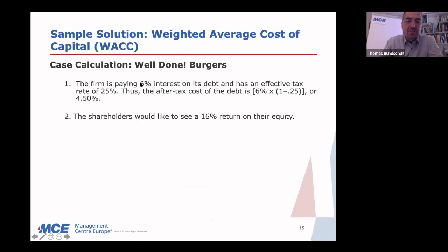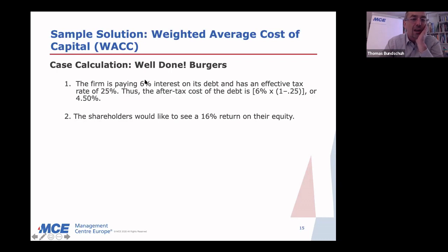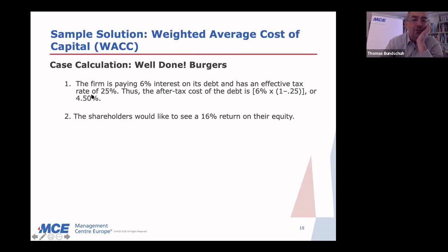The company is paying 6% interest on its debt, and the effective tax rate is 25% — meaning they pay 25% on their profits. Additional costs like interest reduce the tax they pay, which means the after-tax cost of debt is 6% times one minus 0.25. You only need to account for three-quarters of the interest rate, so the after-tax cost of debt is 4.5%.